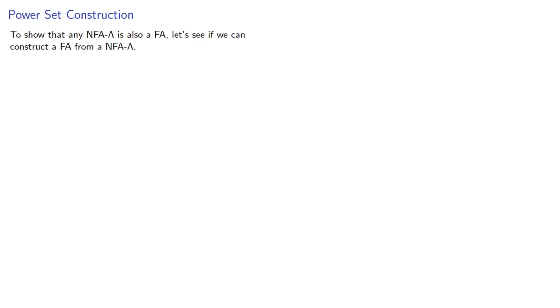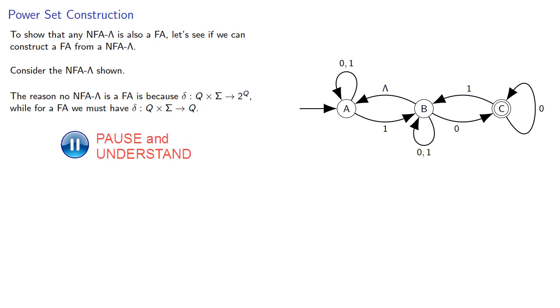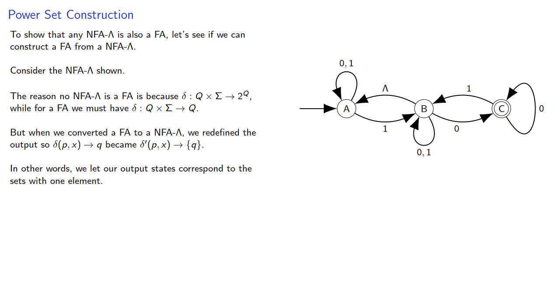Going the other way is going to be a little bit harder. To show that any NFA-lambda is also a finite automaton, let's see if we can construct it. The reason an NFA-lambda is not automatically a finite automaton is because its transition function goes to the set of subsets, while for a finite automaton that transition function has to go to the set of states. When we converted a finite automaton to an NFA-lambda, we let our output states correspond to sets with one element. So what if we let our input states be sets as well?